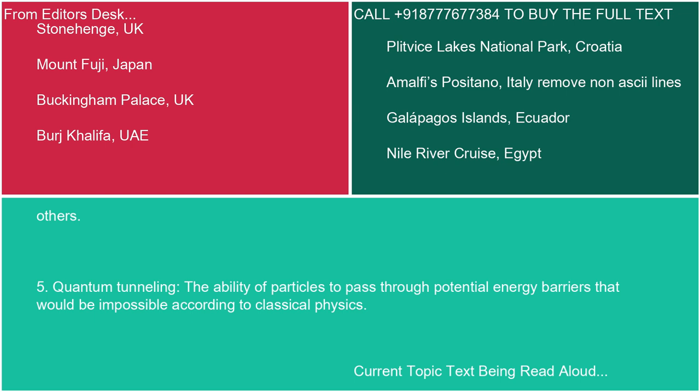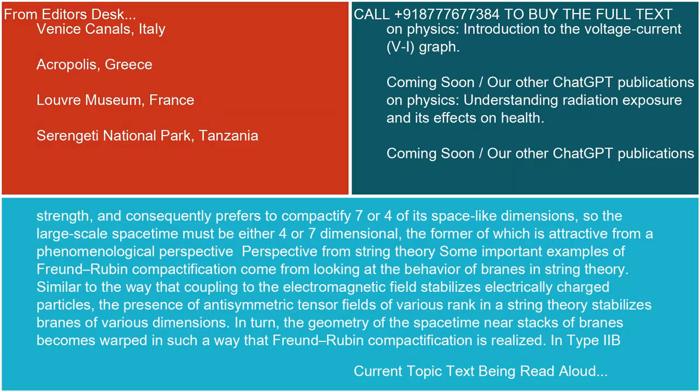5. Quantum Tunneling: The ability of particles to pass through potential energy barriers that would be impossible according to classical physics. 6. Quantum Spin: A fundamental property of elementary particles that gives rise to their intrinsic angular momentum and magnetic moment.